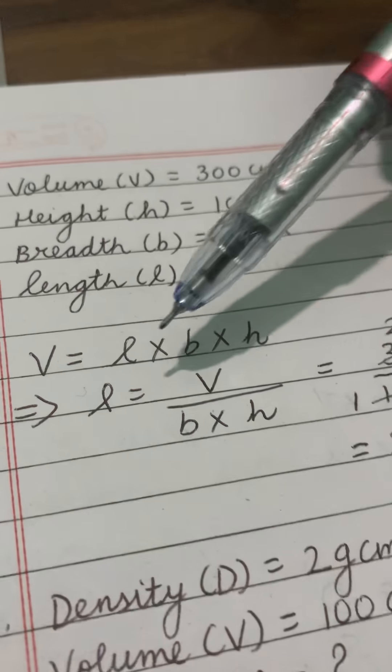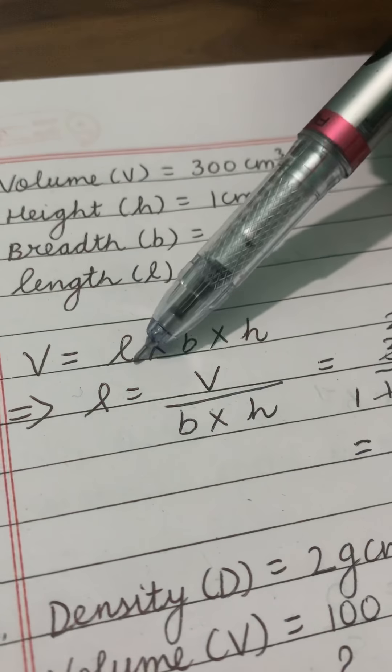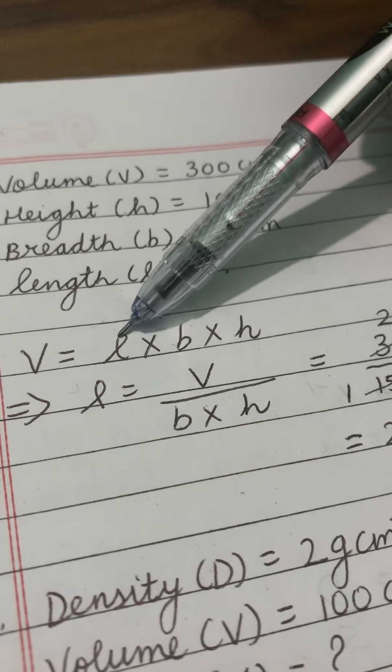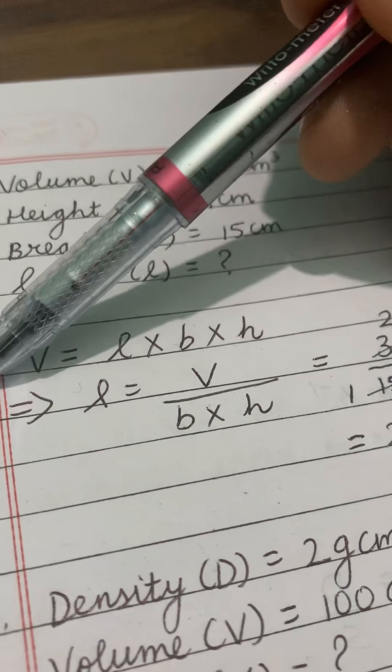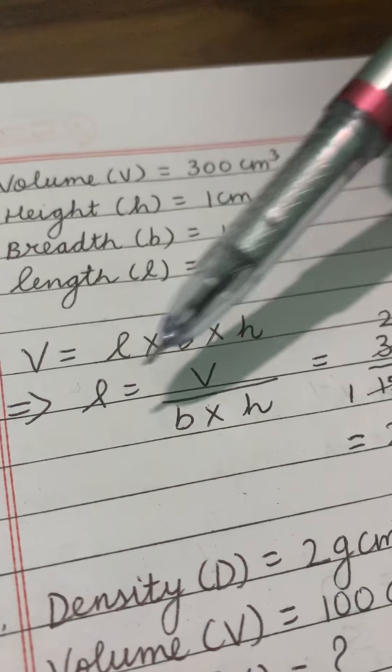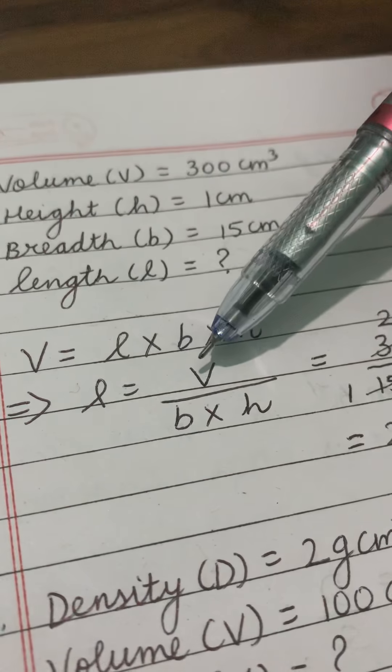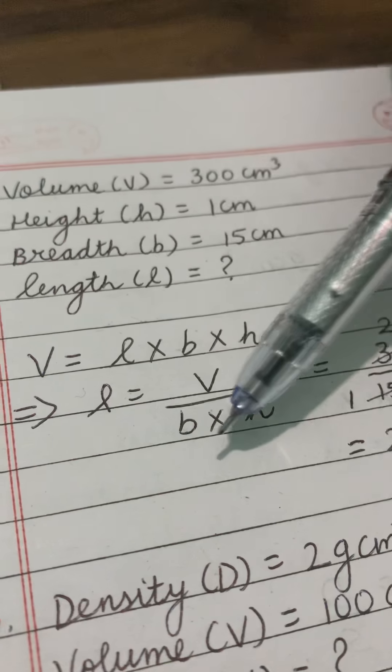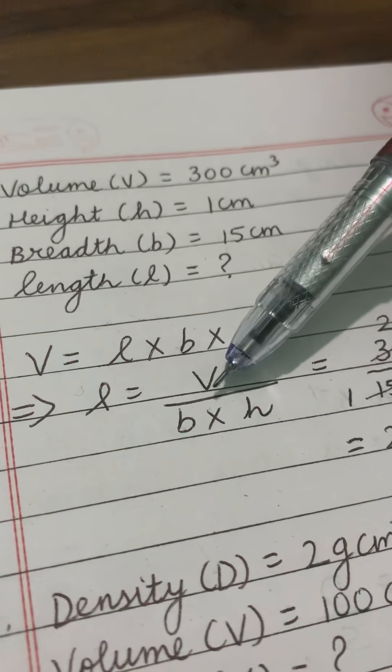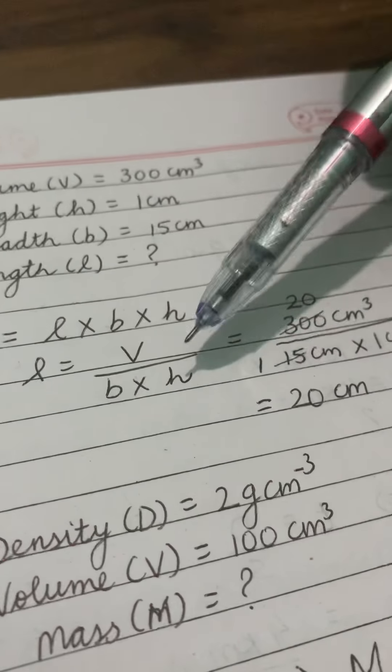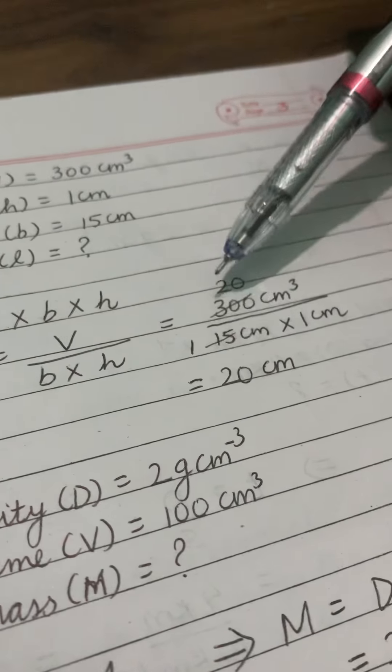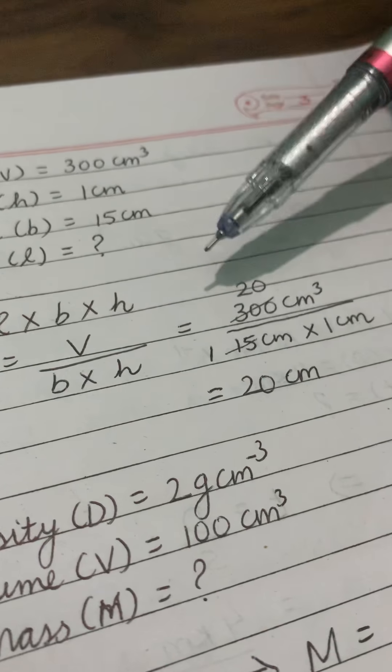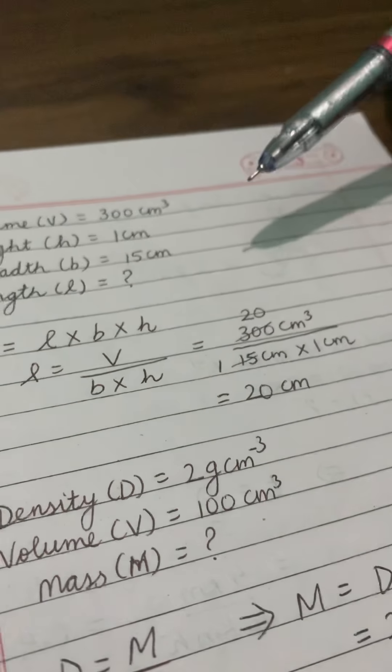We knew the formula of volume. First formula L into B into H. Since we have to find L. We know B and H are multiplied with L. So when they will go to this side that is your left hand side it will get divided. So B into H was multiplied here but this side when it goes to the left hand side it gets divided that is V divided by B multiplied by H. Substitute the value of V. Substitute the value of B, then H and solve it and you will get the answer of length.